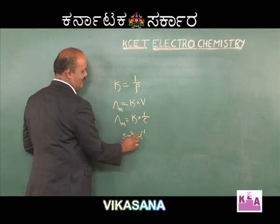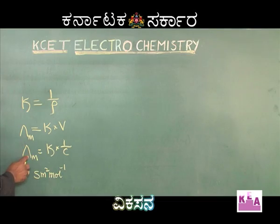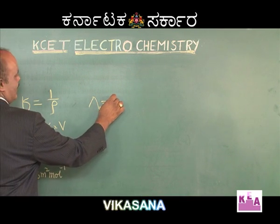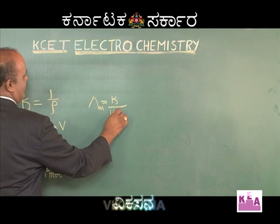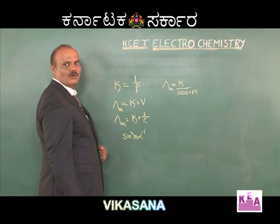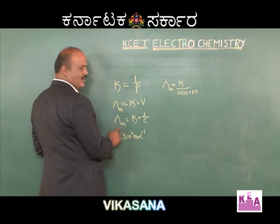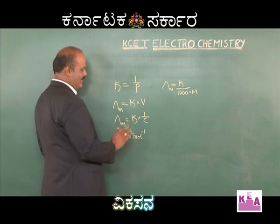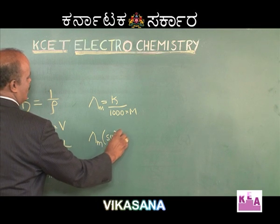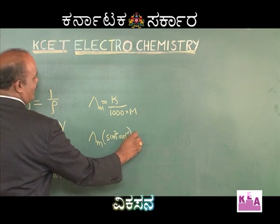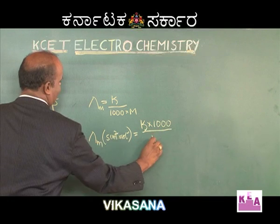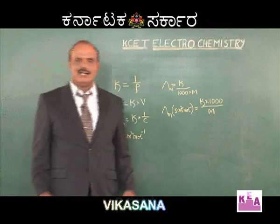Molar conductivity can be expressed in units of siemens meter squared per mole — this is the SI unit of molar conductivity. Molar conductivity can also be calculated as lambda M equals specific conductance divided by 1000 into molarity. You can also express molar conductivity in centimeter squared units: lambda M in siemens centimeter squared per mole equals specific conductance into 1000 divided by molarity.